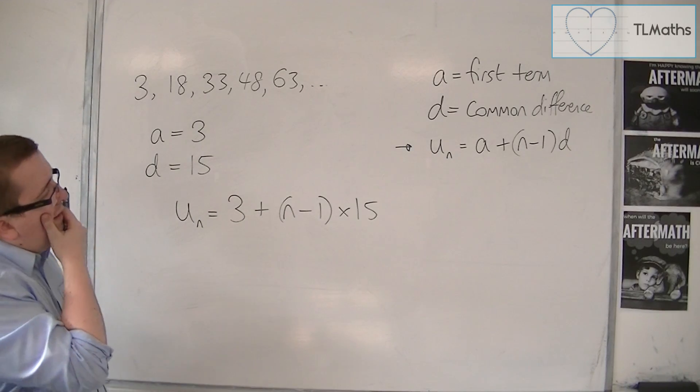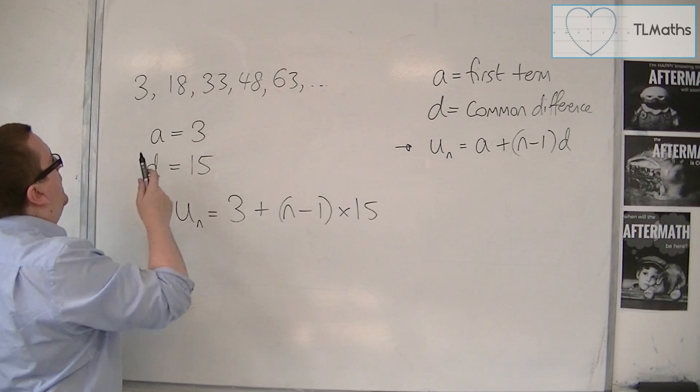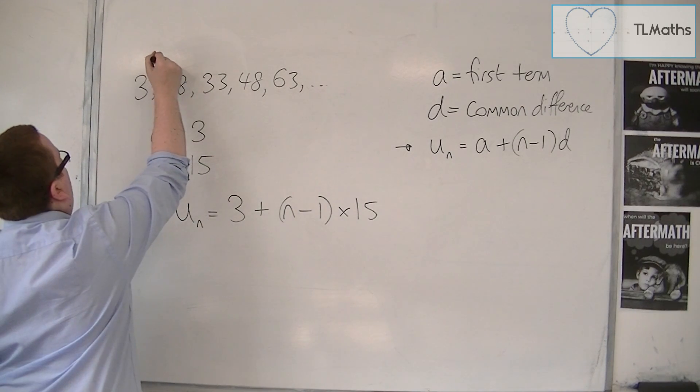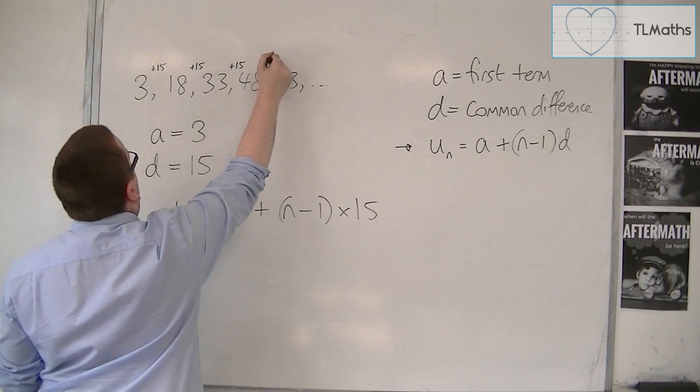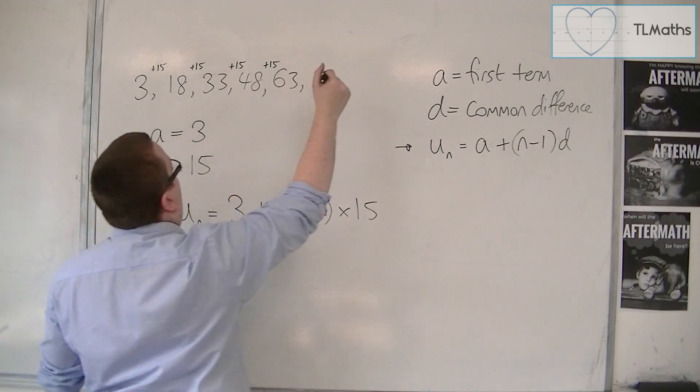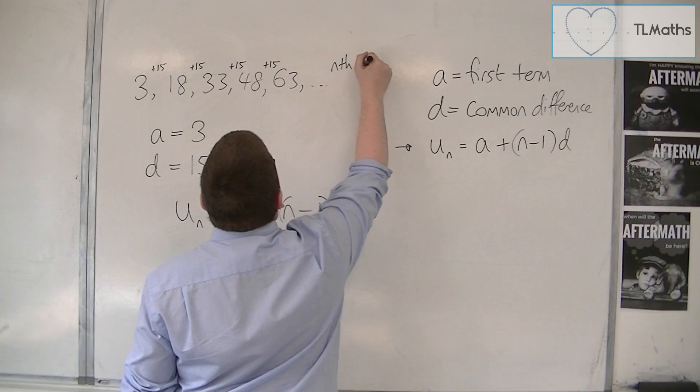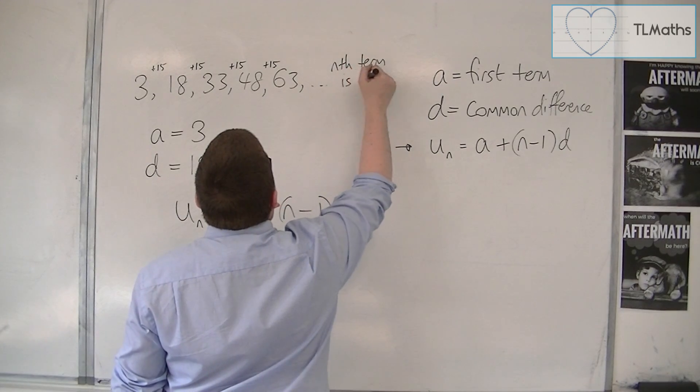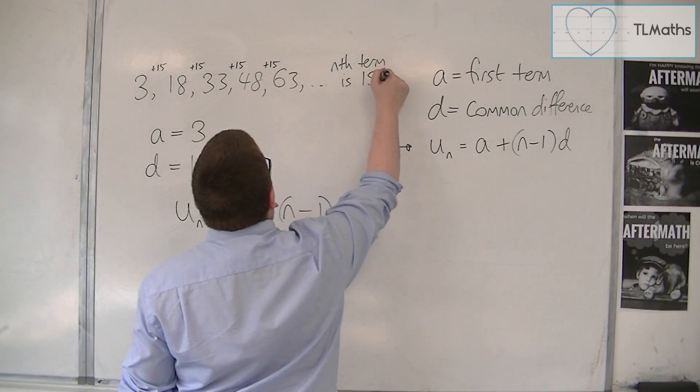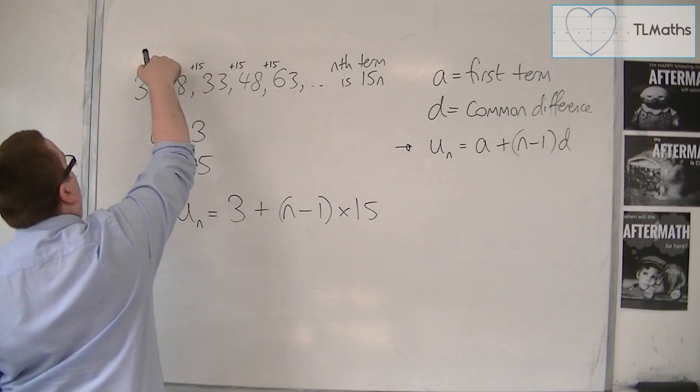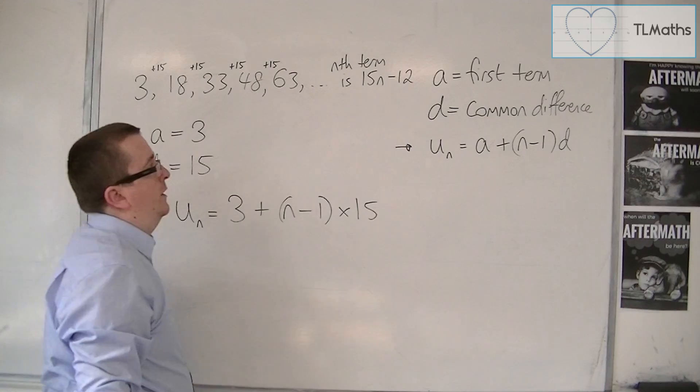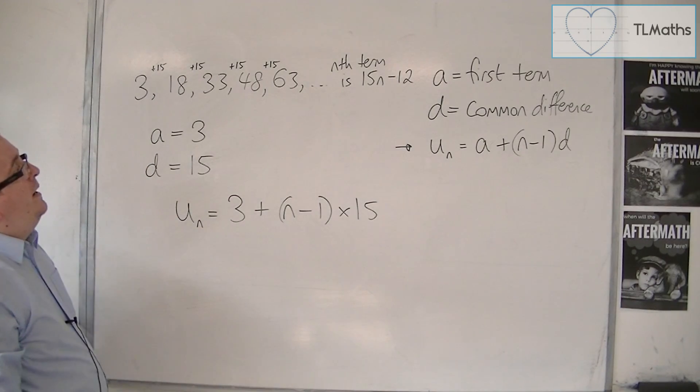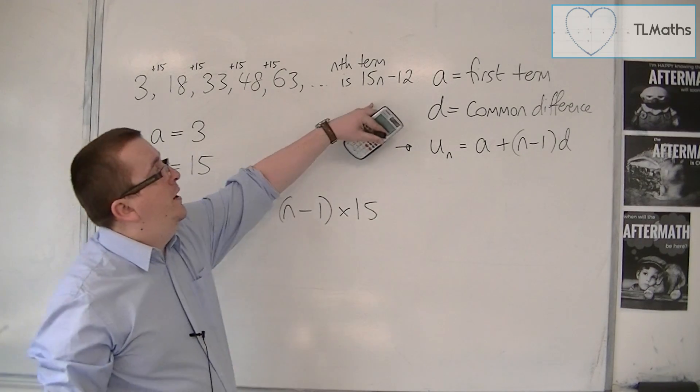Now what you probably remember from GCSE is adding on, putting plus 15 for each term. The nth term is, the 15 goes in front of the n, and then you go from 15 to 3, so that's minus 12. That would be how you would do it at GCSE.